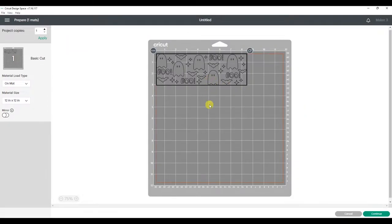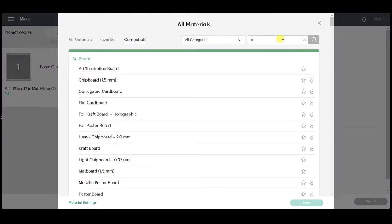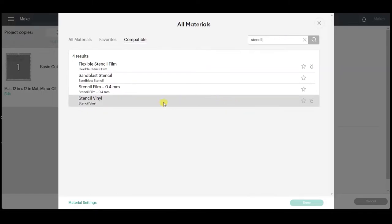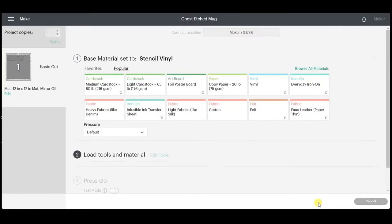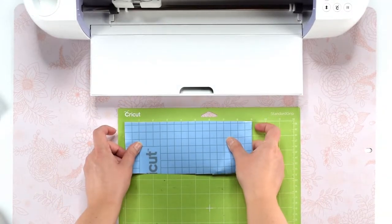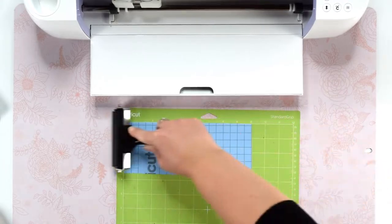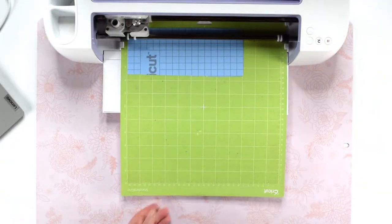to select our material type. I will browse all materials and search for stencil, then select stencil vinyl and click done. Next, we can place the vinyl on the standard grip mat with the colored side up. I also like to use the brayer tool to make sure the material is stuck down really well. Then we are ready to load the mat and start cutting.